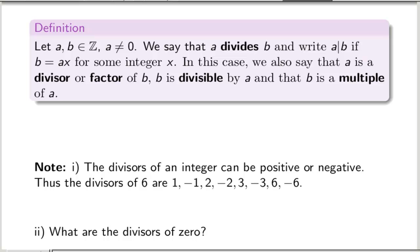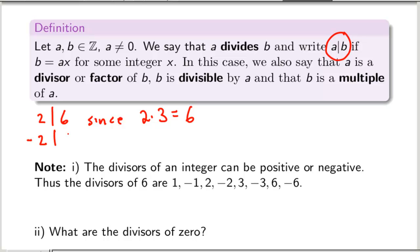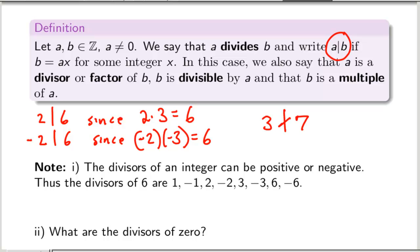If a and b are any two integers with a not equal to zero, we say that a divides b and write it with a vertical bar. Or if b is a times x for some integer x. We can also say a is a divisor or factor of b, b is divisible by a, and that b is a multiple of a. So 2 divides 6 since 2 times 3 equals 6. And negative 2 divides 6 since negative 2 times negative 3 is 6.